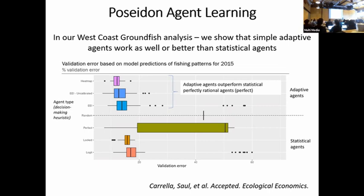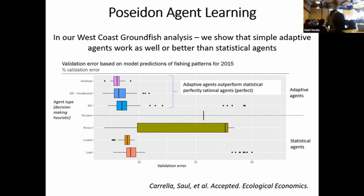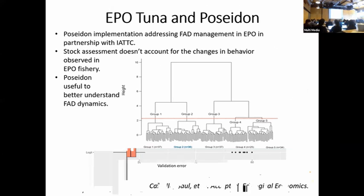When we implemented this for the West Coast, the machine learning algorithm performed a lot better in terms of recreating the sort of past trajectories compared to more statistically locked methods. If we fit choice models to the fishing fleet to explain their behaviors and put those choice model parameters back into the model and ran the simulation, those runs did not come quite as close as allowing the agents to be adaptable and learn — in terms of recreating the past of what happened — with that groundfish fishery implementation.